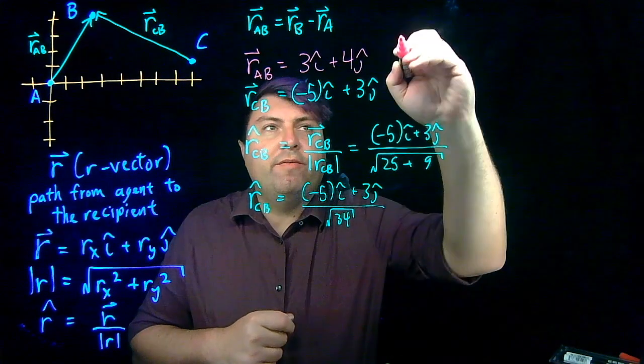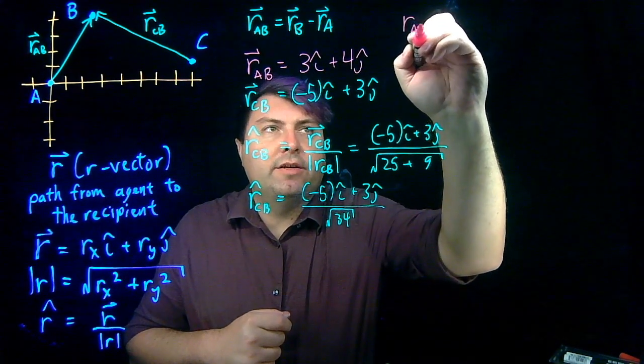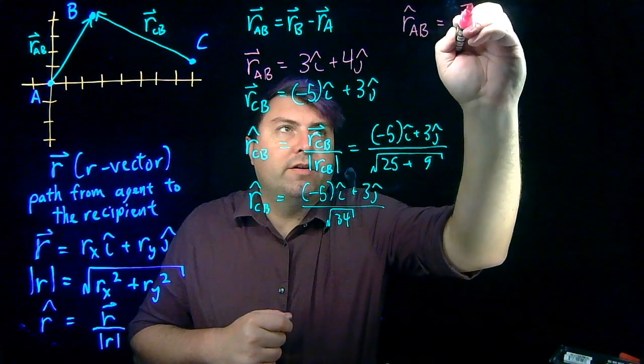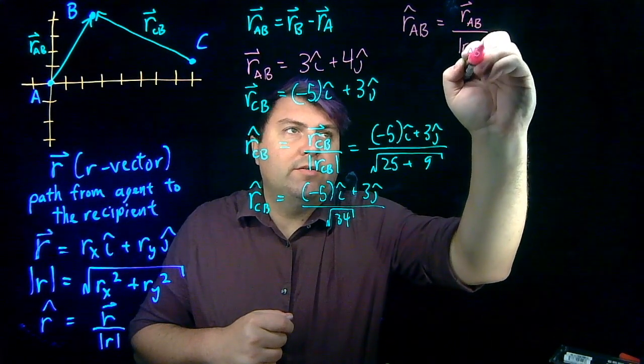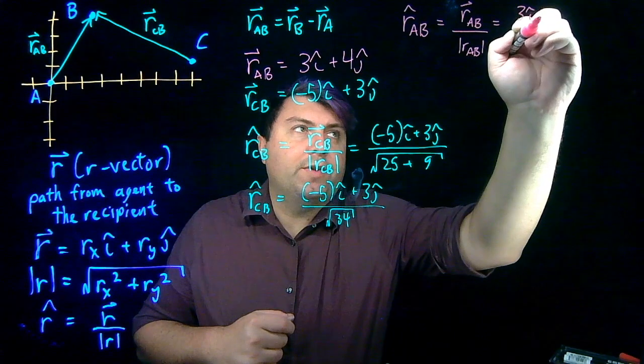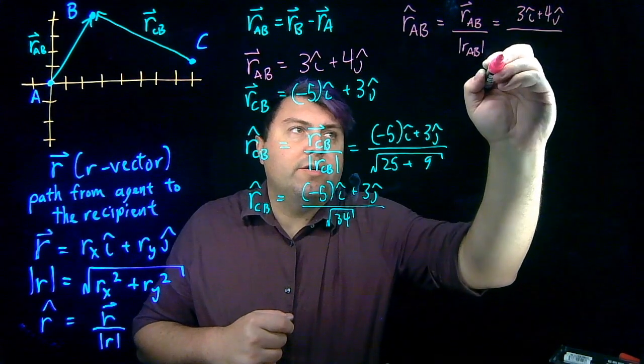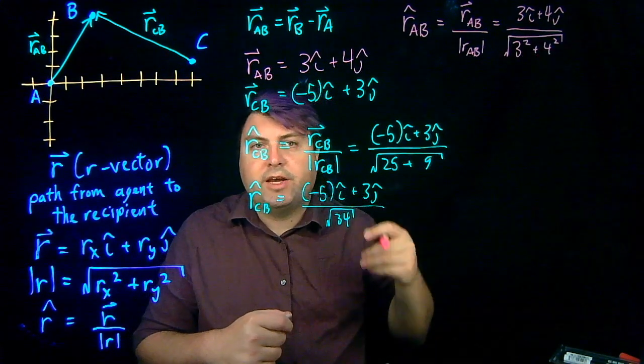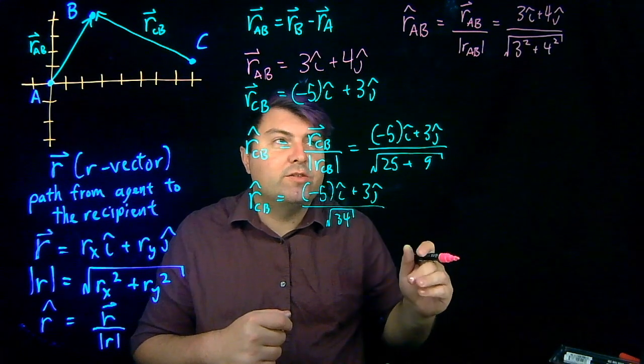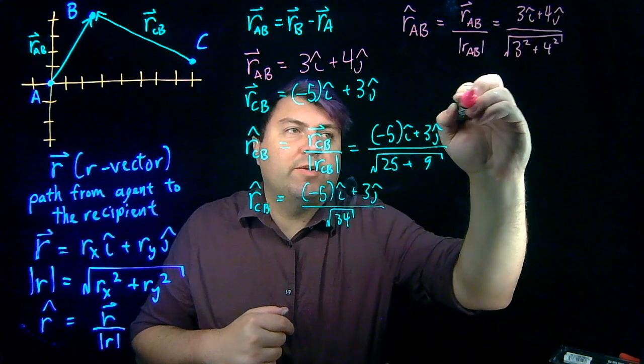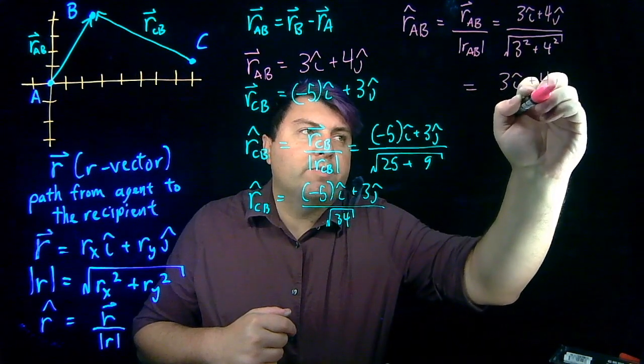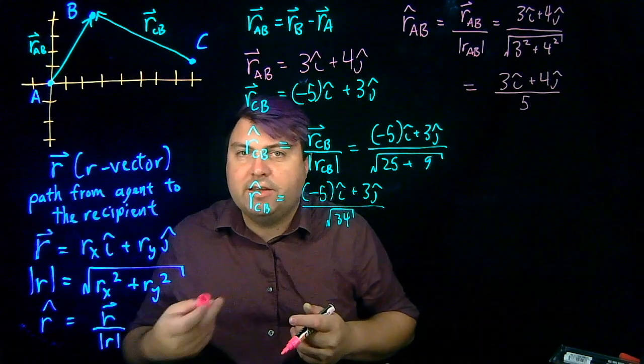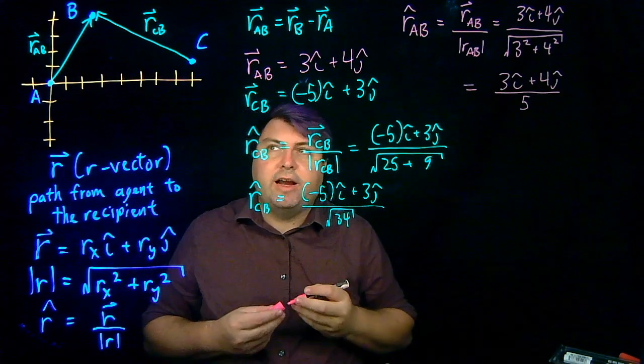For r-AB, we have r-hat AB is going to be r-AB vector over the magnitude of r-AB, and we get 3 i-hat plus 4 j-hat. The magnitude is going to be the square root of 3 squared plus 4 squared. 3 squared is 9, 4 squared is 16, 16 plus 9 is 25, and in fact, we can express the square root of 25 as just 5. But that's going to be kind of how easy or tough these r-hats and r-vectors are going to be.